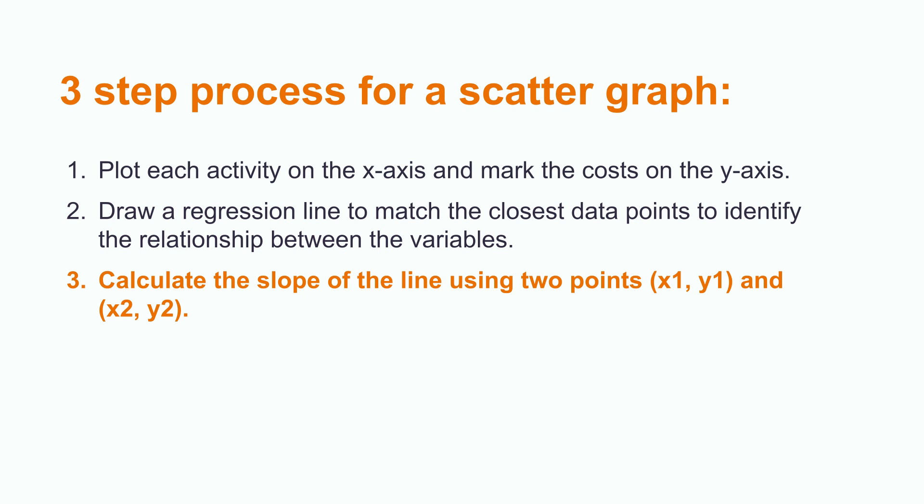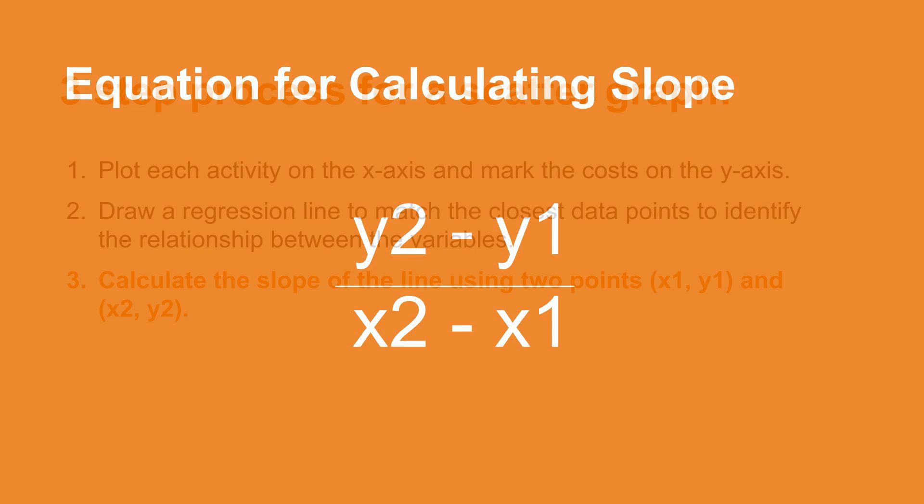Finally, after determining the fixed cost in step two, the slope of the line, then the variable cost per unit, is calculated by using two points, x1 and y1, and x2 and y2 on the line. The formula to find per unit variable cost can be written as follows: y2 minus y1 divided by x2 minus x1.